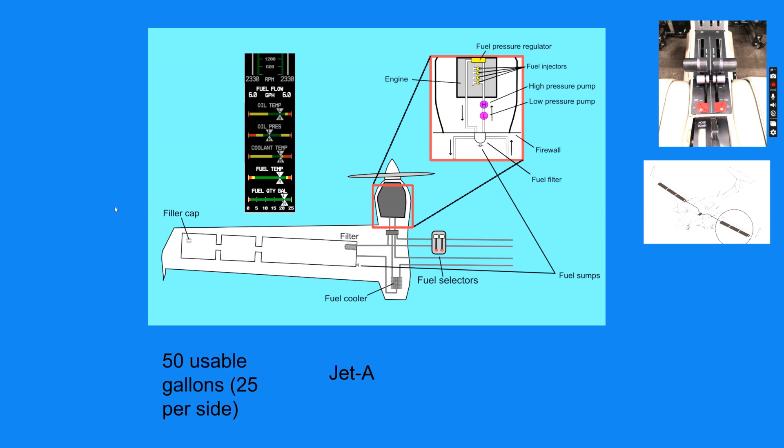So 50 usable gallons total uses Jet A normally. With certain restrictions, it can run on diesel. I'm basing this presentation off of the aircraft having TAE-125 engines. There's a limitation of not having more than a 5 gallon imbalance between the two wing tanks.